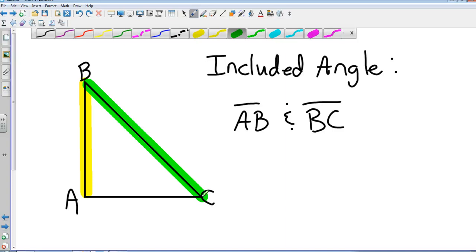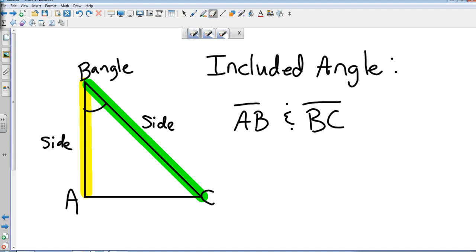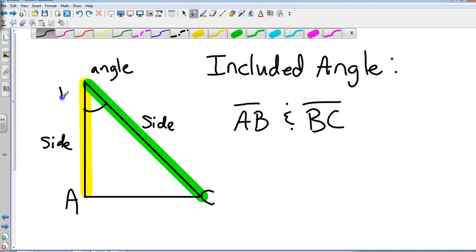And I take this side, and what angle is formed by those two sides? Angle B. That's the included angle. So in Side-Angle-Side, this is my side, this is my side, and this is my angle. Hence the name, because it's in order: side, angle, side. Again, it's in order: side-angle-side.